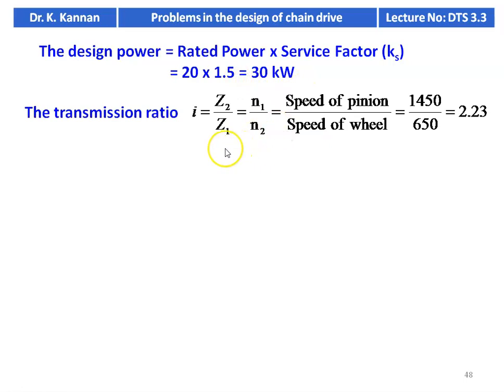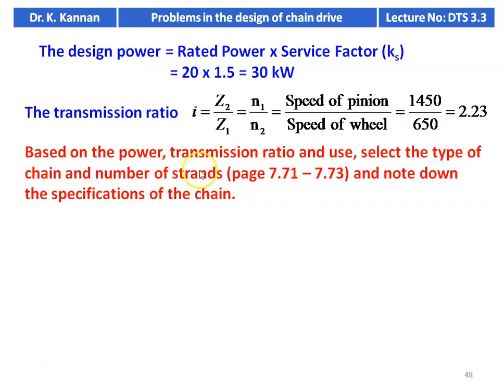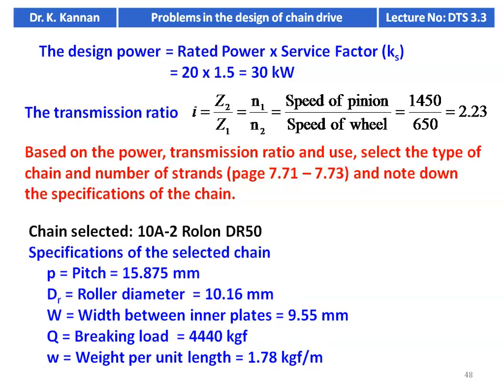Transmission ratio I = N1/N2 = Z2/Z1 = 1450/650 = 2.23. Based on power, transmission ratio, and use, we select the chain from pages 7.71 to 7.73. We select 10A2 roll-on DR50 — DR stands for double strand, because the power is high, we take a double strand chain of 10A2 series. Specifications: pitch = 15.875 mm, roller diameter = 10.16 mm, width between inner plates = 9.55 mm, breaking load = 4440 kgf, weight per unit length = 1.78 kgf/m.